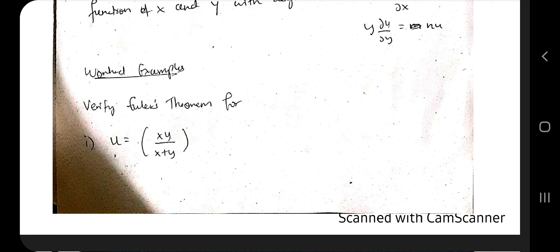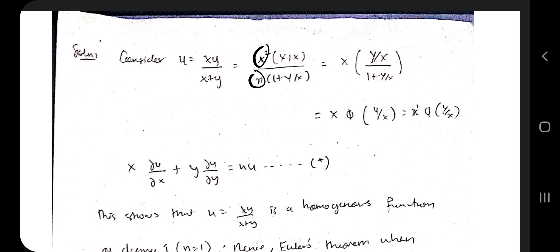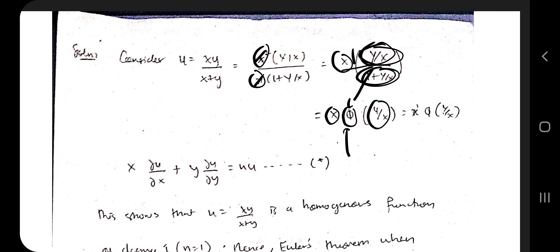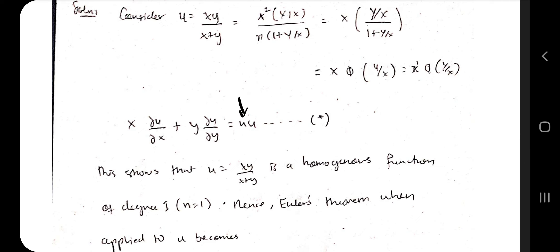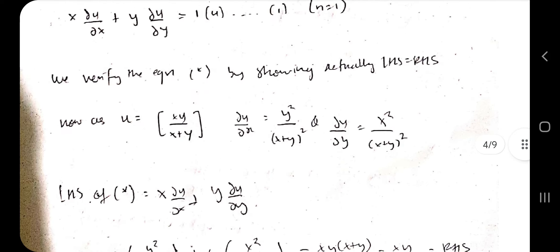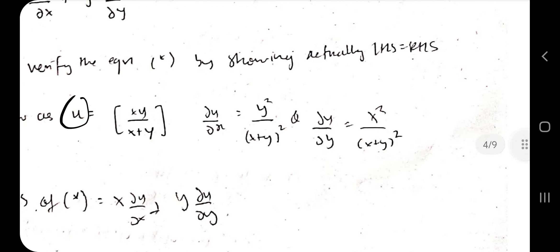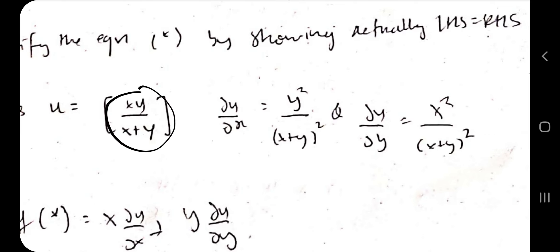To prove u = xy/(x+y) is homogeneous, take out x from numerator and denominator, cancel it, and express the remaining terms as x·φ(y/x). Here the power of x remaining is 1, so the degree n = 1, meaning the result should equal 1·u = u. We then need to find ∂u/∂x: keep y constant and differentiate. Using the quotient rule, we get y² / (x+y)².